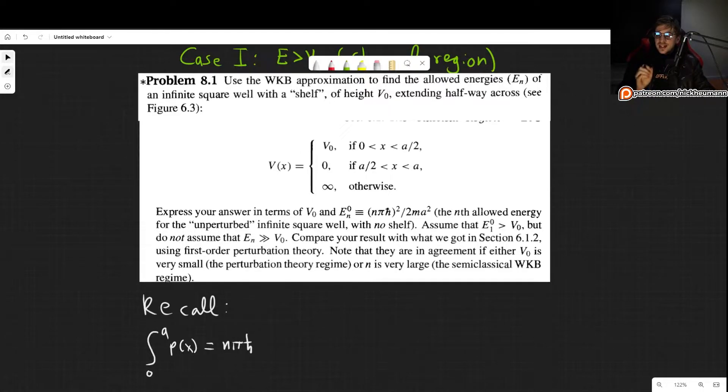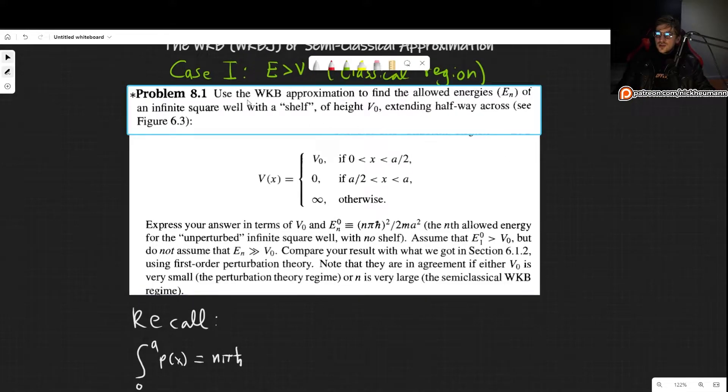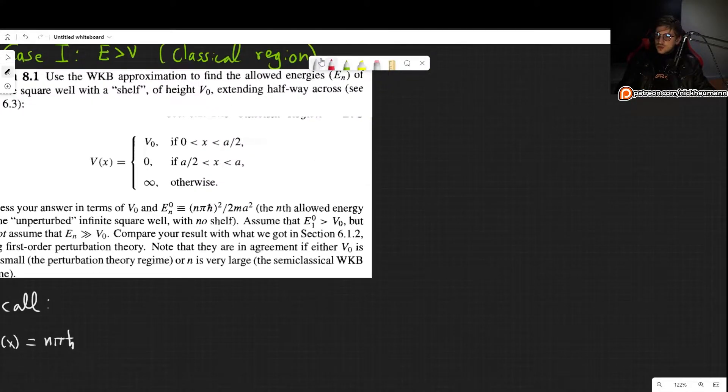Now this problem states the following: Use the WKB approximation to find the allowed energies of an infinite square well with a shelf of height V0 extending halfway across, which is basically what I'm going to show you right here. So we have an infinite square well as we have seen many times before.